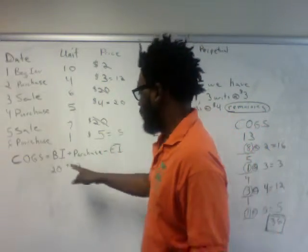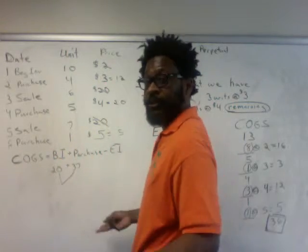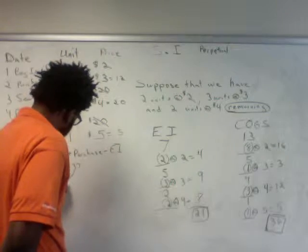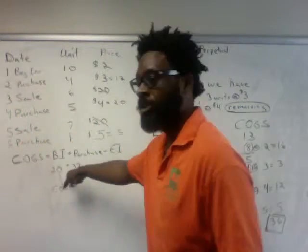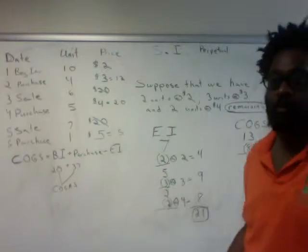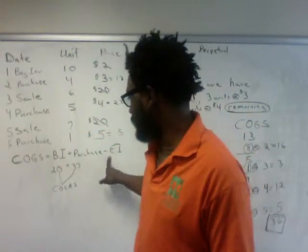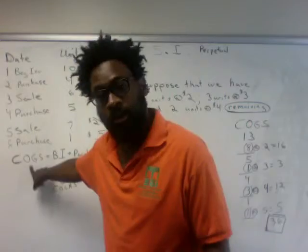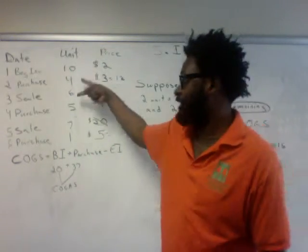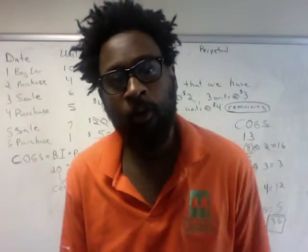Those two components together are considered your cost of goods available for sale — the total cost of your goods available for sale. Regardless of what inventory method you choose, this number will stay the same because it's given.